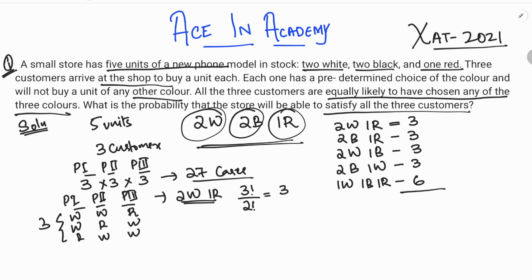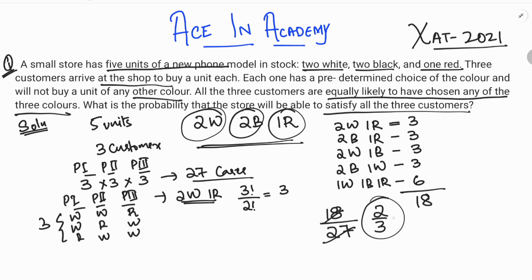Adding all these cases: 3 + 3 + 3 + 3 + 6 = 18 different cases in which the customers' needs are satisfied. The probability equals required cases divided by total sample space, which is 18/27. Both are divisible by 9, giving a final answer of 2/3.